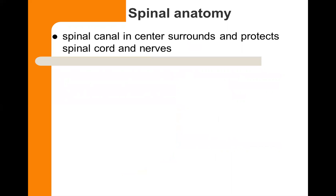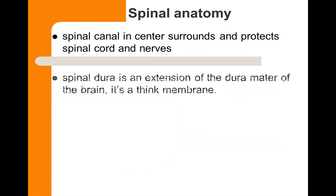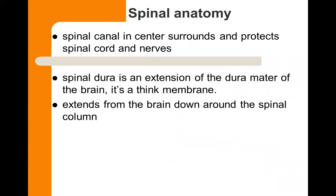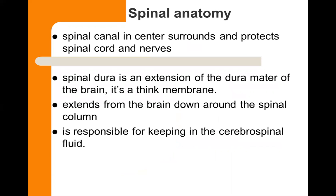The spinal canal sits in the center and surrounds and protects the spinal cord and nerves. The spinal dura is an extension of the dura mater of the brain — it's a thin membrane that extends down from the brain around the spinal column. It keeps the CSF, or cerebrospinal fluid, in. That cerebrospinal fluid acts as a barrier to protect the spinal cord.